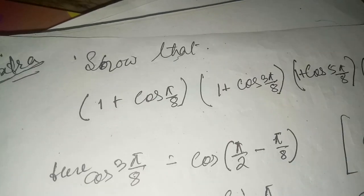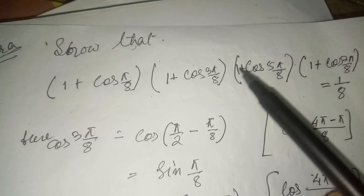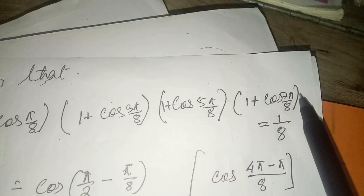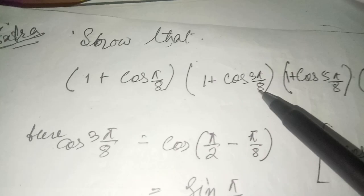Let us discuss some more extra questions from the trigonometric chapter of class 11. The question is: show that (1 + cos π/8)(1 + cos 3π/8)(1 + cos 5π/8)(1 + cos 7π/8) equals 1/8.